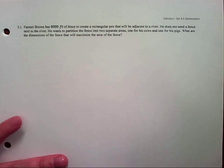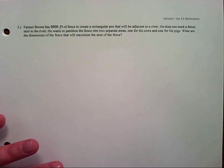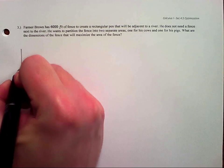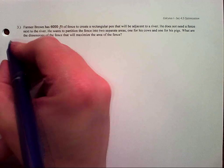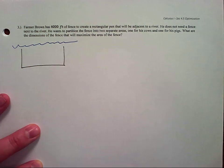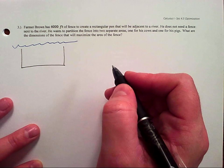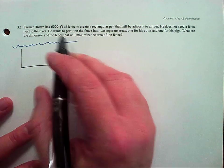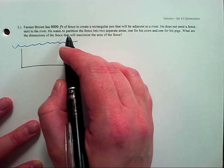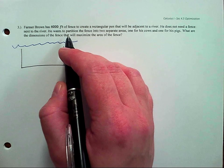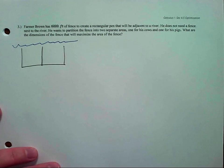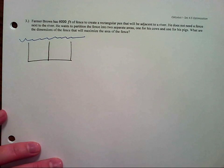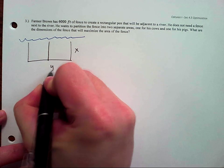We need to draw a picture, make a key, write an equation. He has a fence next to a river — doesn't need a fence along the river. It's partitioned into two pieces. Partition means to split it up. Now let's make some variables. I'll call one side x and the other side y.